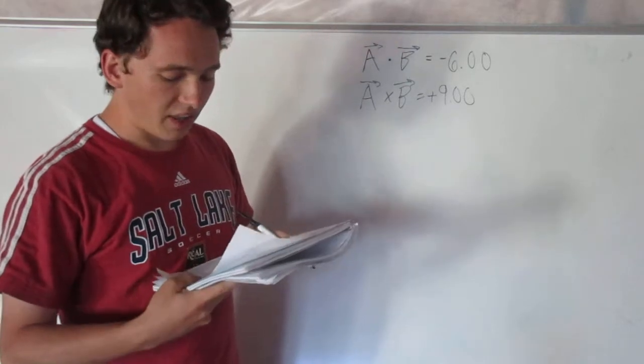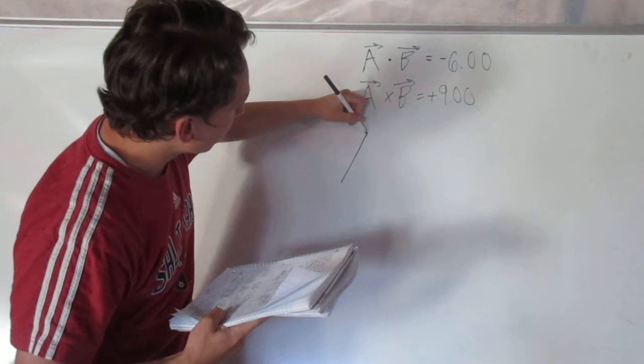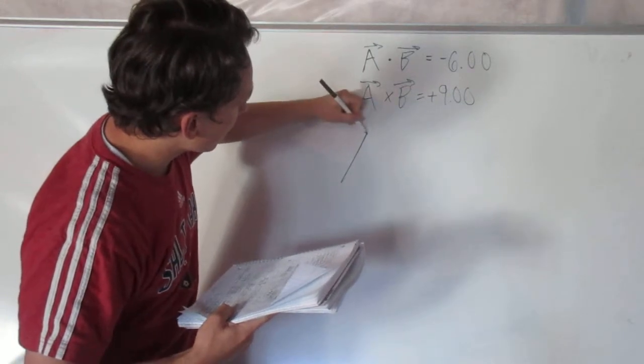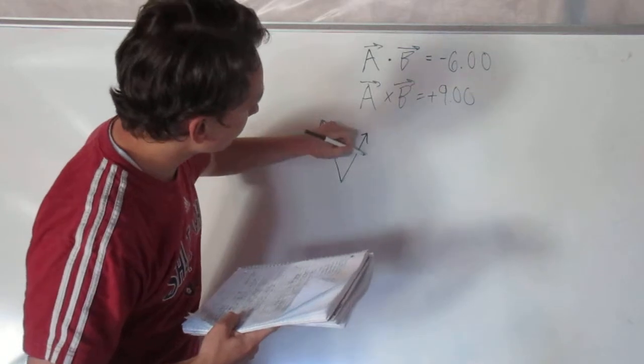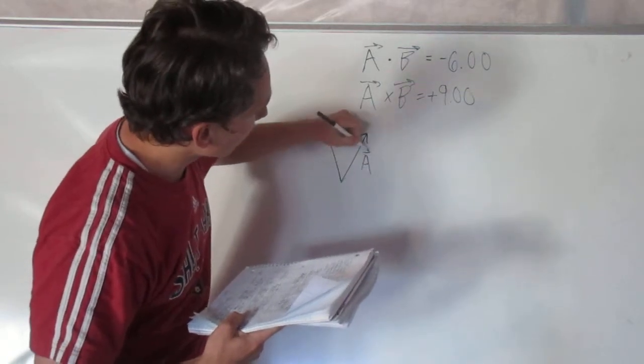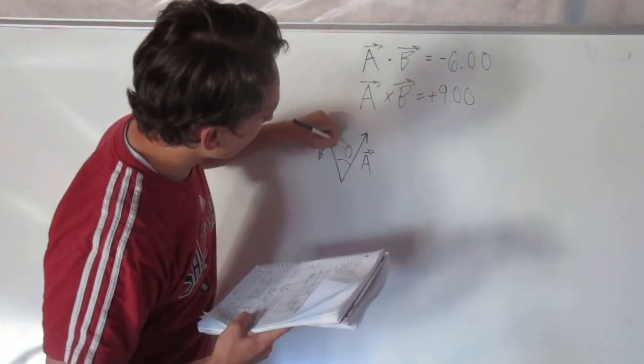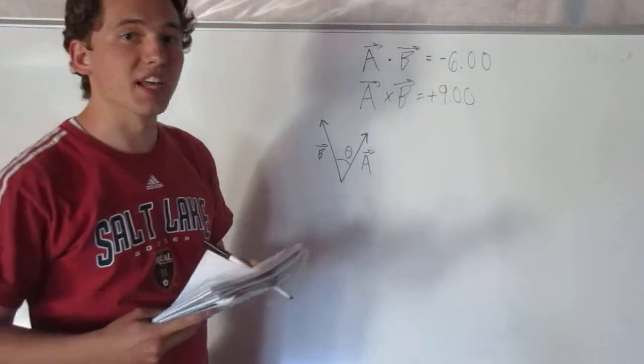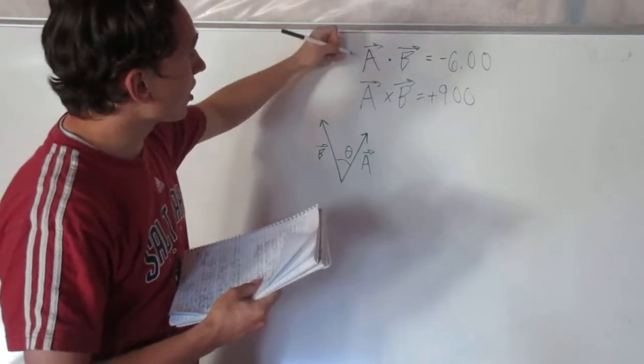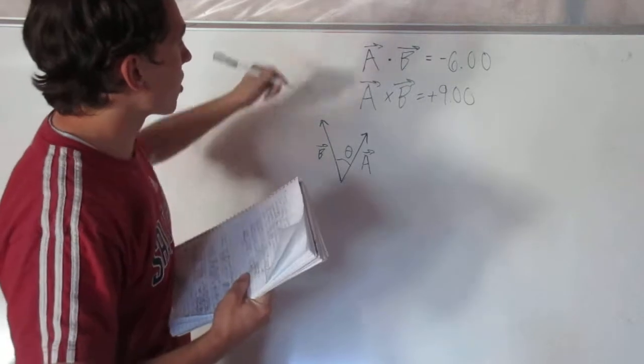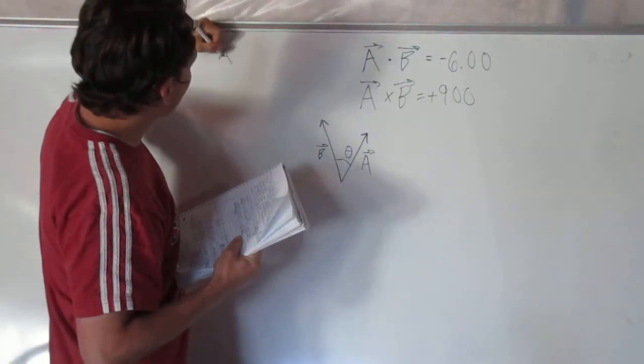They want us to find the angle between vectors A and B. If we draw this out, we have vector A and vector B, and we want to find the angle between them. We can actually use the formulas for the dot and cross product to give us this angle.